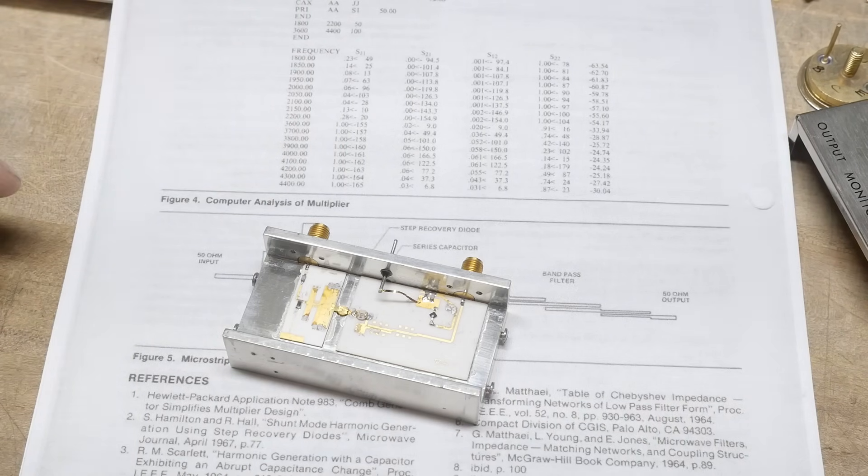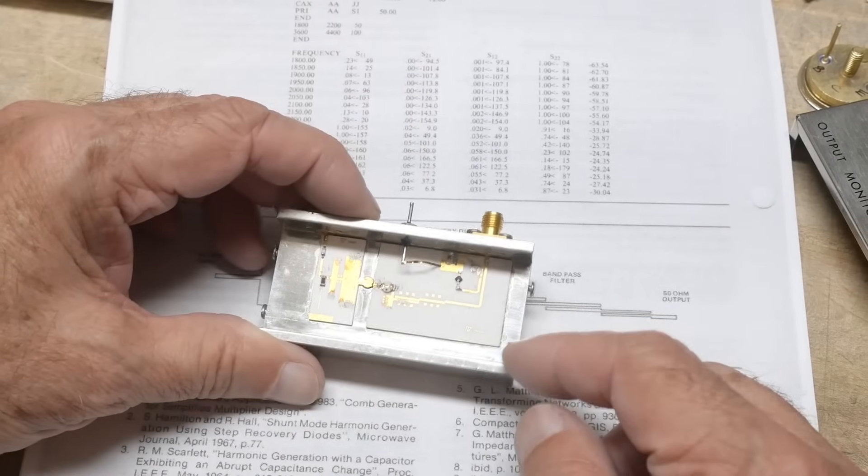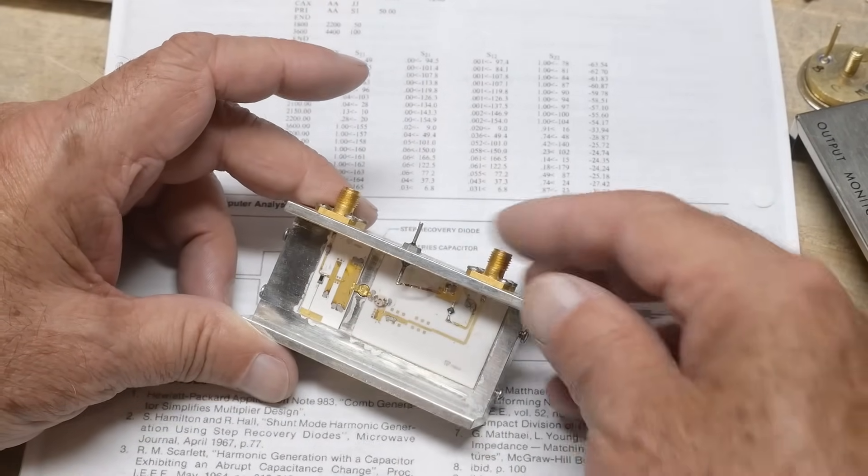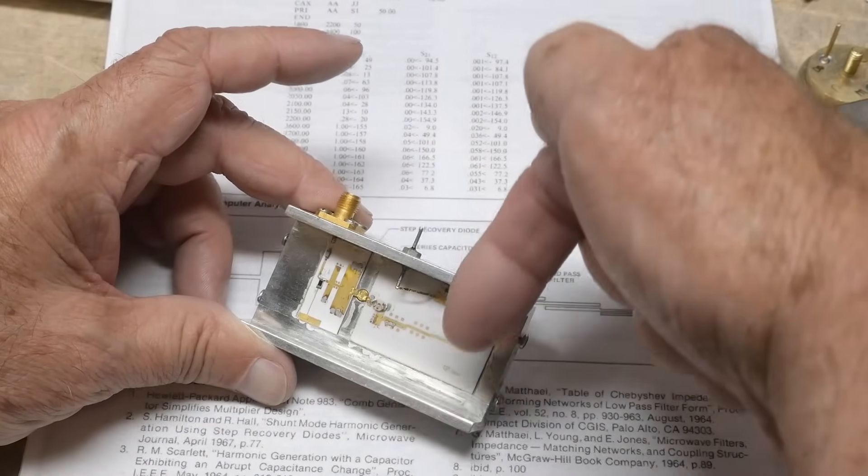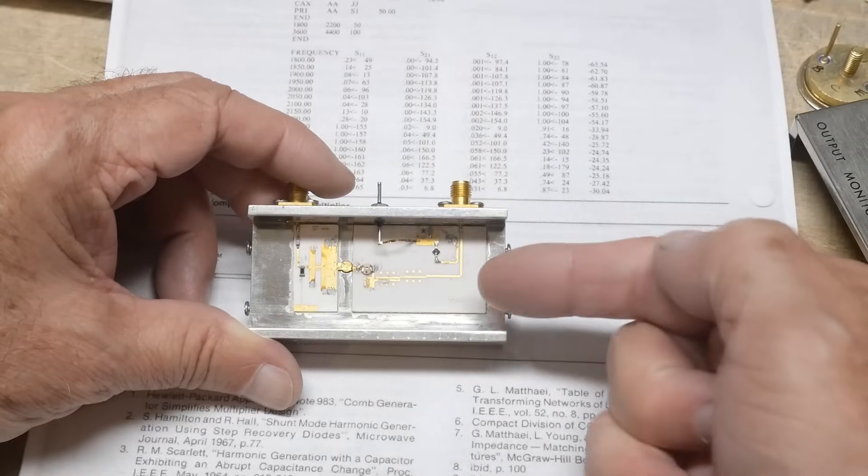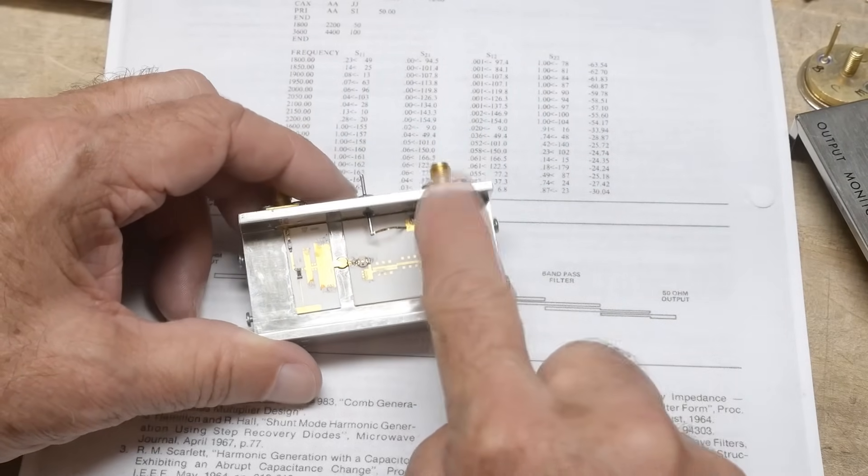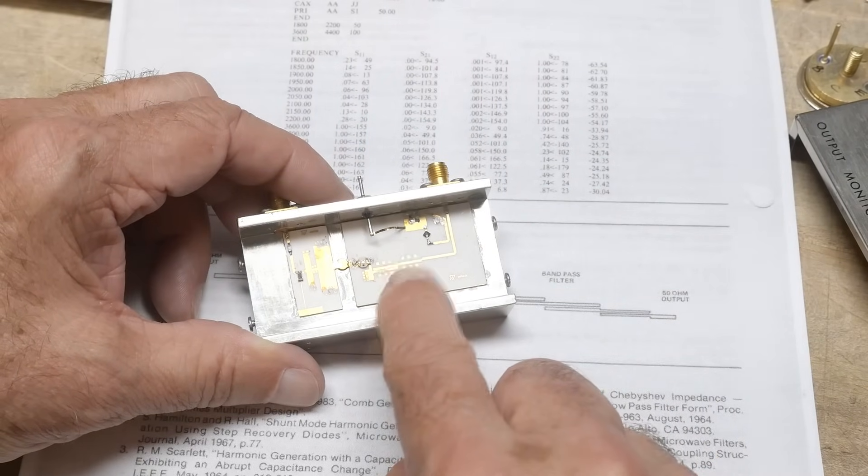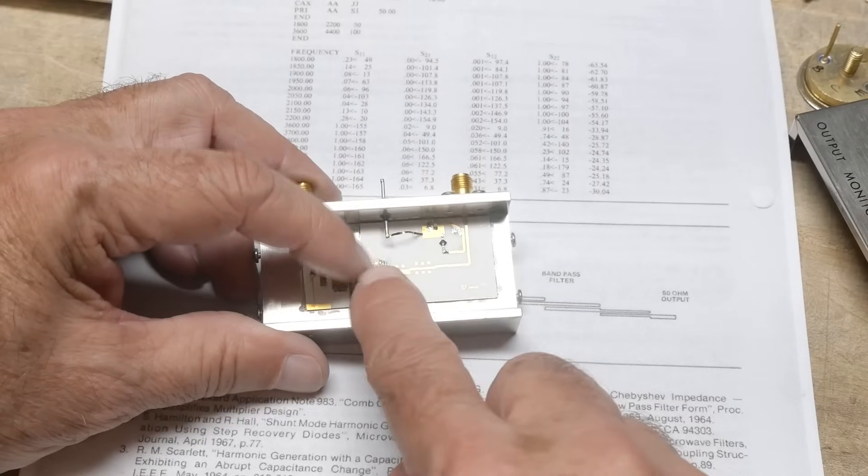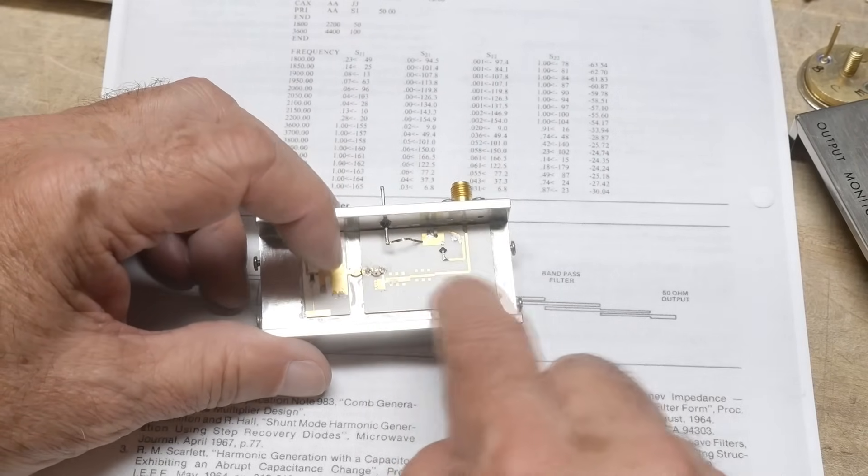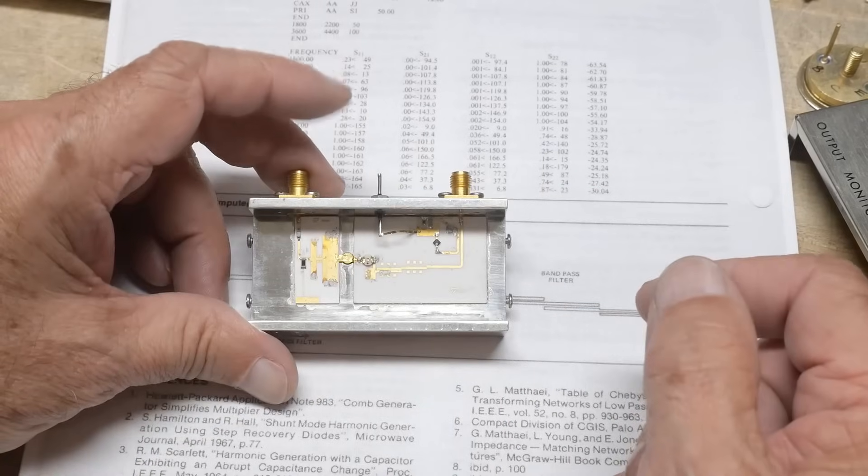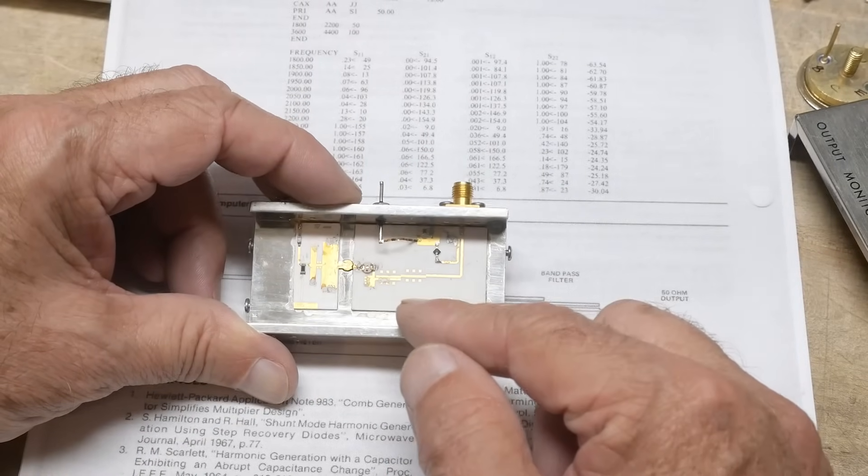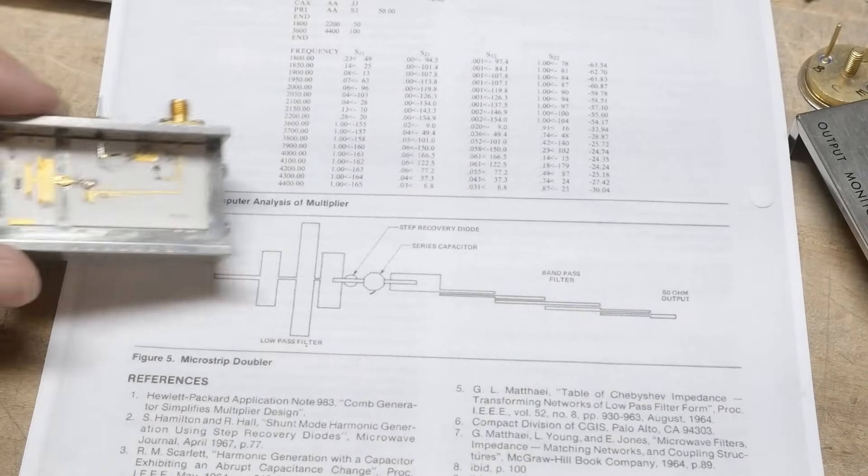And I don't know why I didn't think of it this time. But what you do is you look at the output, you put a VNA on the output, and you go in and measure S11 into here. And the first thing it sees is this bandpass filter. And the S11 will be perturbed by that bandpass filter, and you should be able to read right off the screen what that frequency is, right?